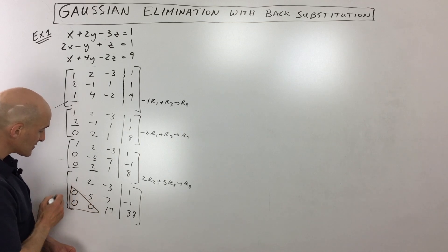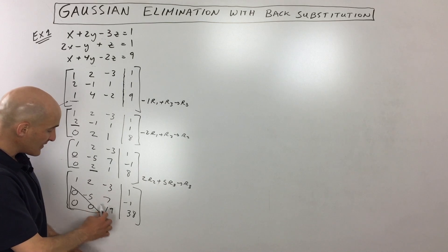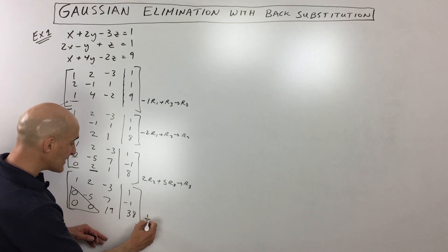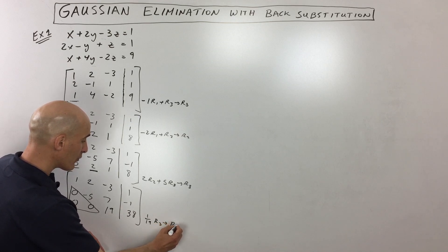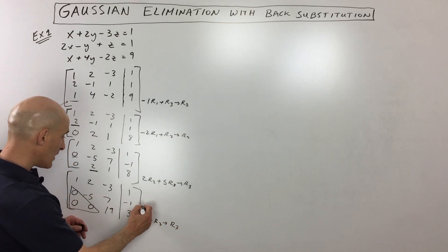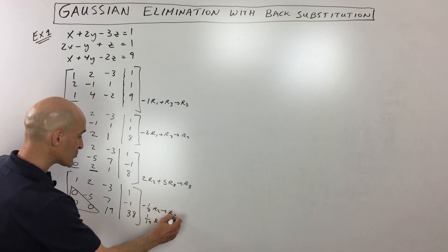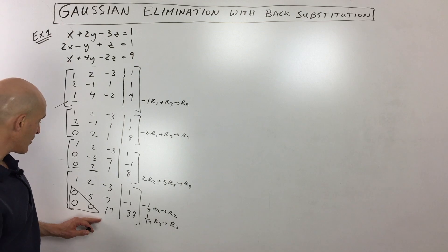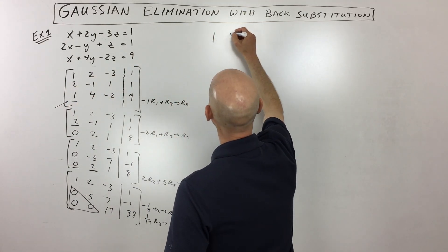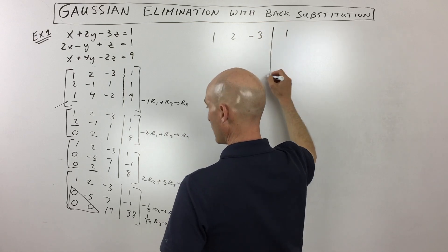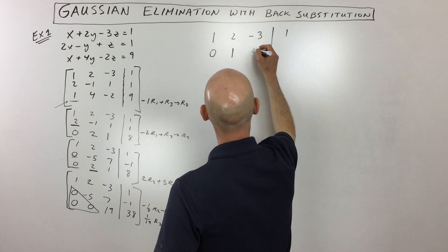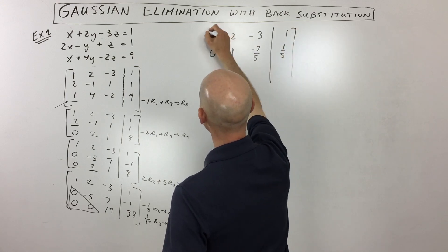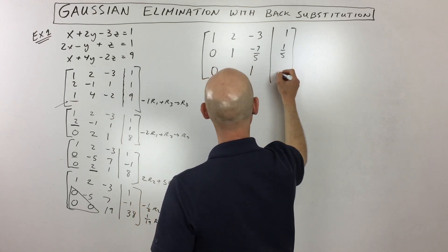The next step is to get ones on the diagonal. I'm going to multiply one-nineteenth times row three and put that answer in row three. I'm also going to multiply negative one-fifth times row two and put the answer in row two. The first row already starts with a one so we're good there. That gives us: row one is 1, 2, -3, 1; row two is 0, 1, -7/5, 1/5; and row three is 0, 0, 1, 2.